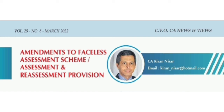Insertion of new Section 148B: It has been provided that no order of assessment or reassessment or recomputation under the Act shall be passed by an officer below the rank of Joint Commissioner, except with the prior approval of the Additional Commissioner, Additional Director, Joint Commissioner, or Joint Director, in respect of assessments consequent to search, survey, and requisition, to reduce avoidable inaccuracies.